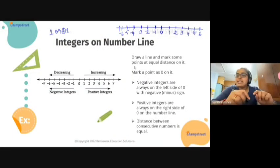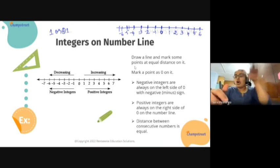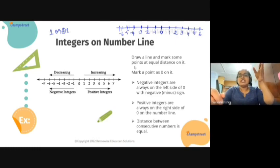So a number line is a line which represents the positions of numbers. We will draw a straight line and mark equal intervals, and at the middle most section, the middle most interval...